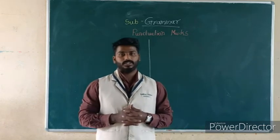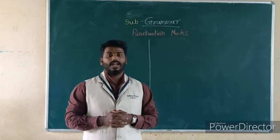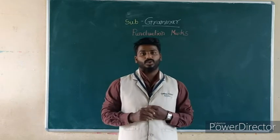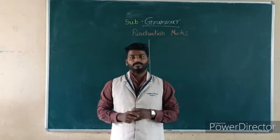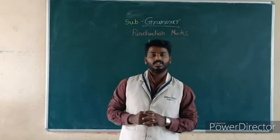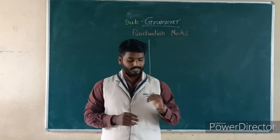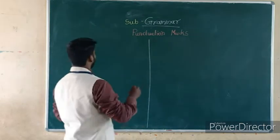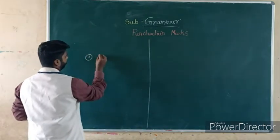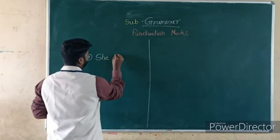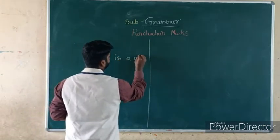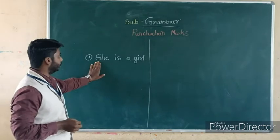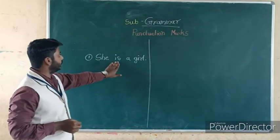First of all, I will start with the capital letter and full stop. When we start writing in English, we have to start with a capital word. Each first word should be capital in writing in English. For example, if I write the line 'She is a girl,' I have started with the capital letter S. This is the starting of this line.